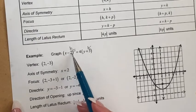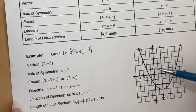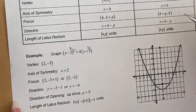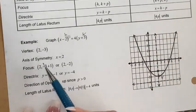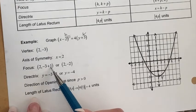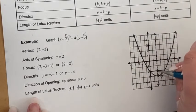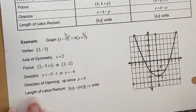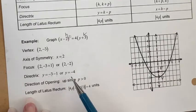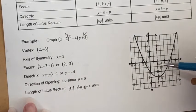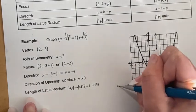Since the square is on x, the axis of symmetry is the vertical line x = 2. The focus is (2, −3 + 1) = (2, −2). The directrix is y = −3 − 1 = −4, so you draw a horizontal line at y = −4 and label it the directrix.